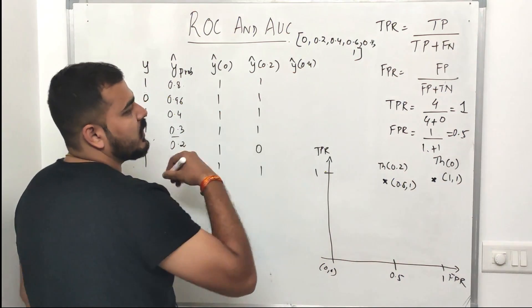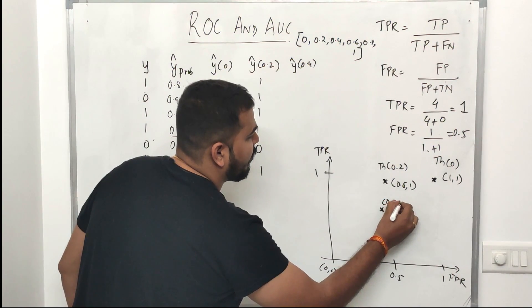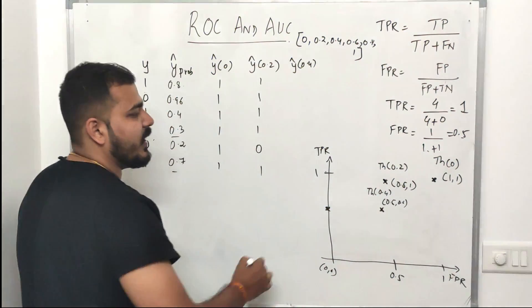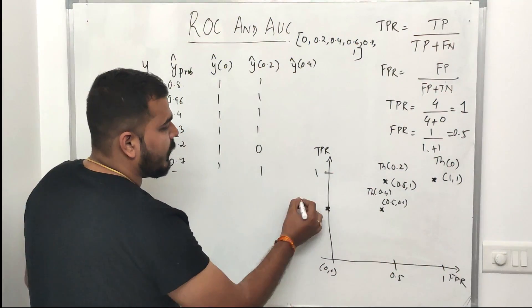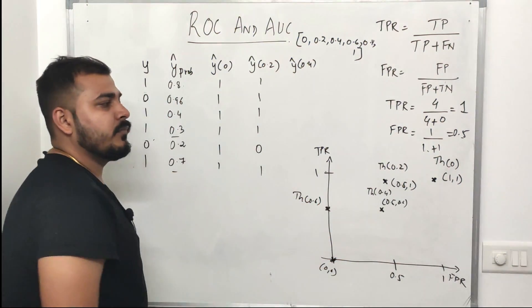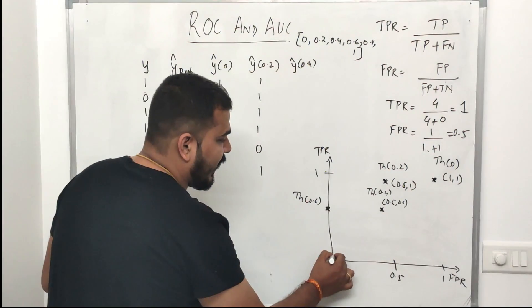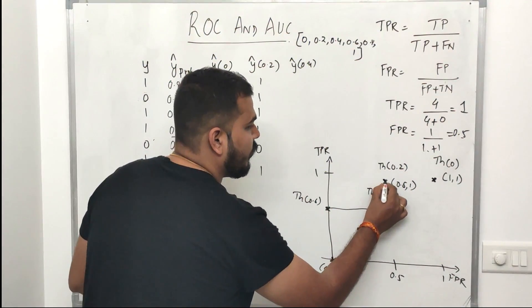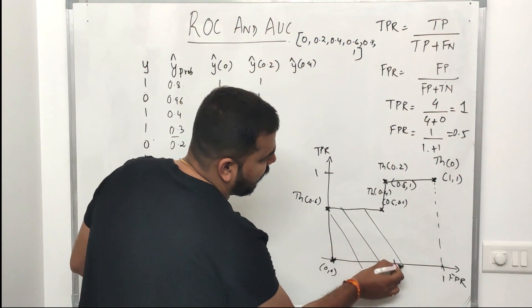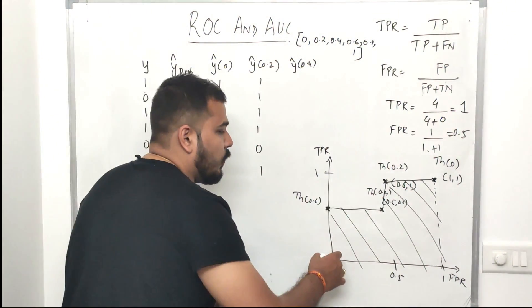Similarly, when we calculate for all threshold values we get more points — for example, around (0.5, 0.6) for threshold 0.4, and further points for 0.6 and 0.8. Connecting all these dots together gives us the ROC curve. The area enclosed under this curve when we connect all the points is basically the AUC — area under the curve.